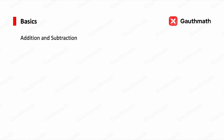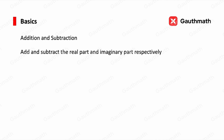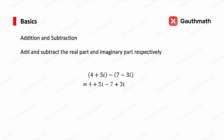We can do some basic calculations with complex numbers. For addition and subtraction, we just add or subtract the real parts and the imaginary parts respectively. For example, 4 plus 5i minus (7 minus 3i): opening the bracket gives 4 plus 5i minus 7 plus 3i. Gathering real and imaginary parts gives (4 minus 7) plus (5i plus 3i), which is negative 3 plus 8i.